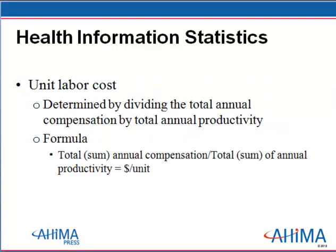The unit labor cost is determined by dividing the total annual compensation — obtained from the formula we just went over — by the total annual productivity. For example, workload in a transcription section of the HIM department is commonly measured in lines or minutes of dictation transcribed. To determine the unit transcription labor cost, divide the total transcription annual compensation by the total annual productivity.